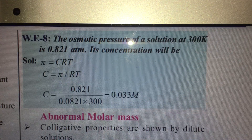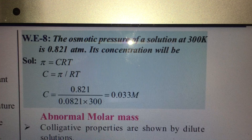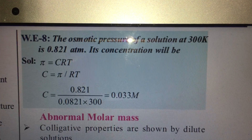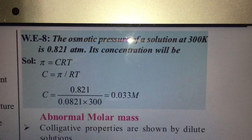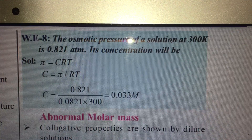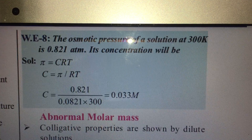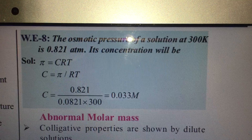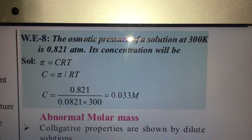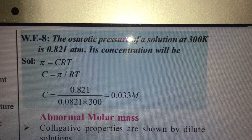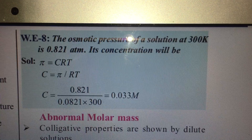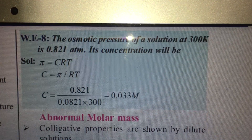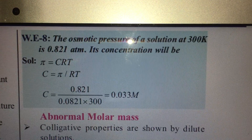The osmotic pressure of a solution at 300 K is 0.82 atm. Its concentration can be found from the relation Φ = CRT, giving C = Φ/(RT). So C equals the osmotic pressure divided by R (the universal gas constant, 0.0821) multiplied by the temperature. This is a simple problem.